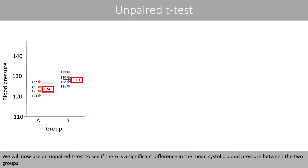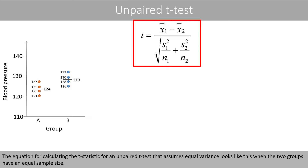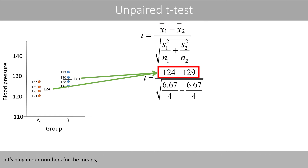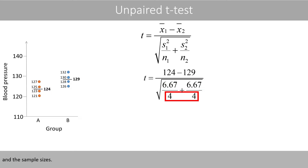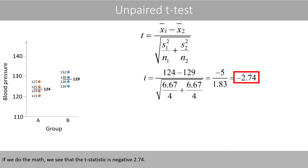We have now used an unpaired t-test to see if there is a significant difference in the mean. The equation for calculating the t-statistic for an unpaired t-test that assumes equal variance looks like this when the two groups have an equal sample size. Let's plug in our numbers for the means, the variances, and the sample sizes. If we do the math, we see that the t-statistic is negative 2.74.